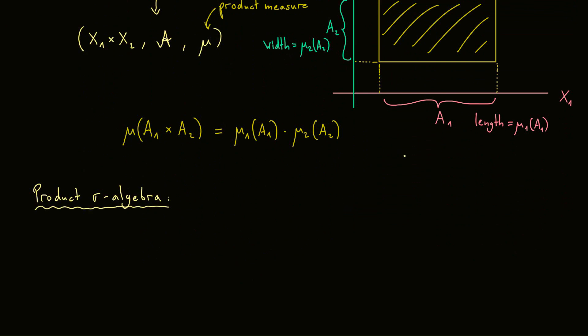The first thing we could try is to consider all possible rectangles here. And we denote this set as curved A1 times curved A2. So the Cartesian product of both sigma algebras. Okay so this one is just a set of all possible rectangles in this sense. Here we have a short sketch. So we take one measurable set A1 out of this sigma algebra. And another one A2 out of the other sigma algebra.